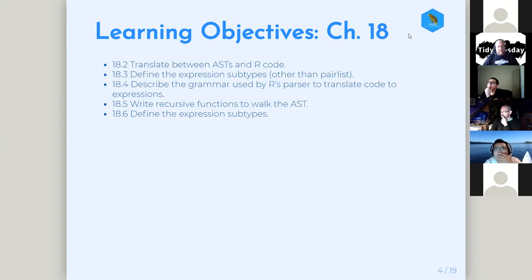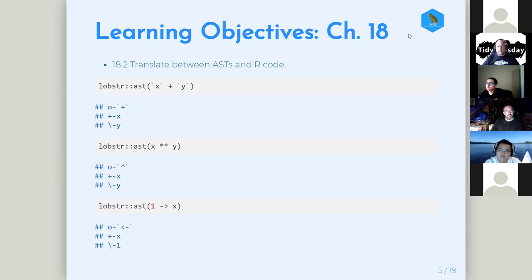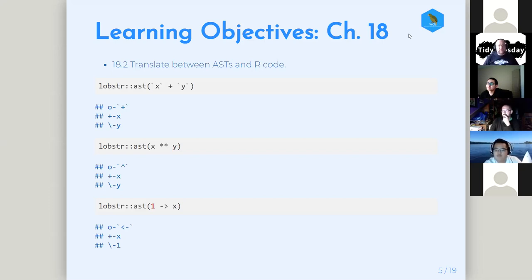Chapter 18 is where things start to get a lot more complicated. The first section is all about syntax trees — you can use lobstr to look at them. One of the main things is that infixes are treated the same as any other function call in R. Also, double-asterisk is a fiction — it gets parsed into caret. And the right arrow becomes a left arrow when the parser sees it.